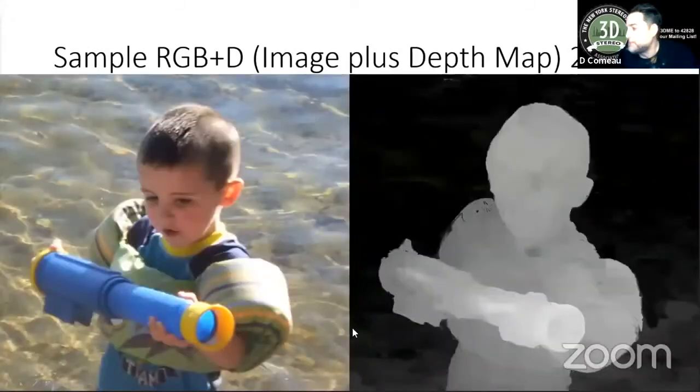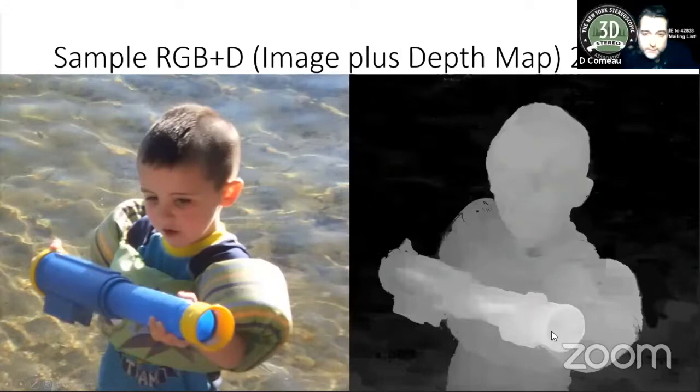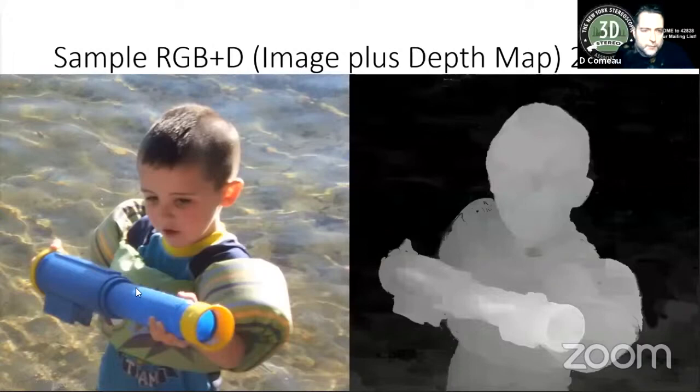Again, here's another depth map, corresponding RGB image, so the water is kind of black back there, and he's pointing this thing toward the front, so it's white, it's coming out close. And we're going to move along.